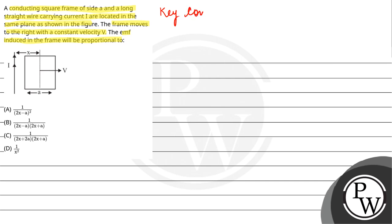So here our key concept is induced EMF in straight conductor that is equal to B L V. Now here B is the magnetic field, E is the EMF, L is length, and V is velocity.